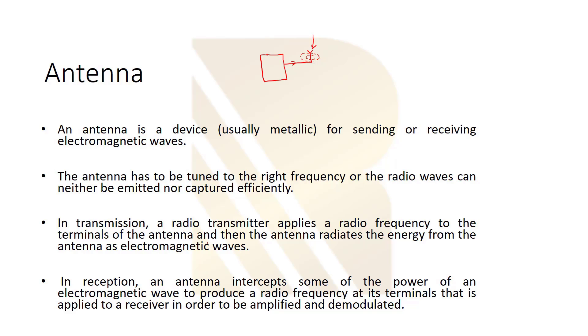In reception, the antenna intercepts some of the power of electromagnetic wave to produce a radio frequency at its terminal that's applied to receiver in order to be amplified and demodulated. We just have to know that the same thing happens here because if you have waves, this antenna basically converts them to a kind of current or voltage that has a radio frequency.